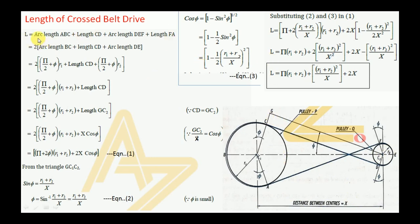By taking these parameters, the length of the belt drive can be written as: L = arc length of ABC (similar to the open belt drive) + length of CD. There is a cross here, then arc length of DF + length of FA gives the total length of the belt drive. Because arc AB equals arc BC, two times this gives the total arc length.